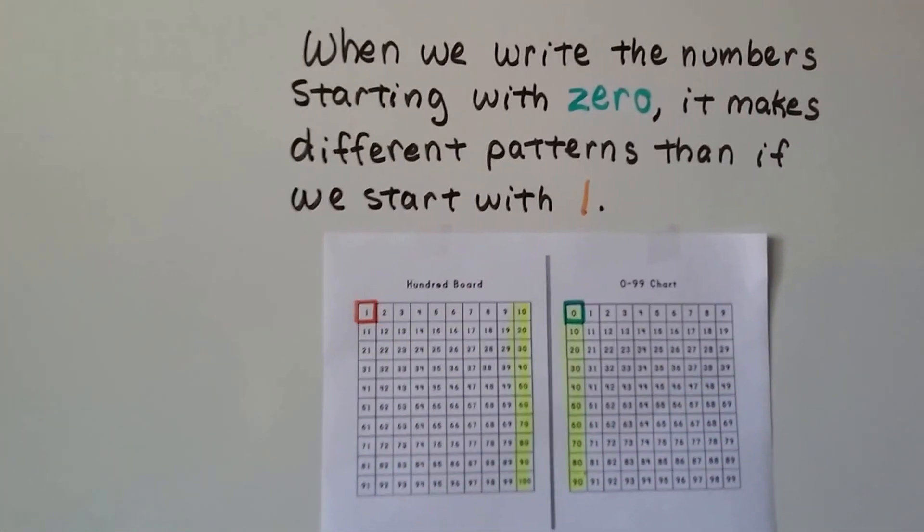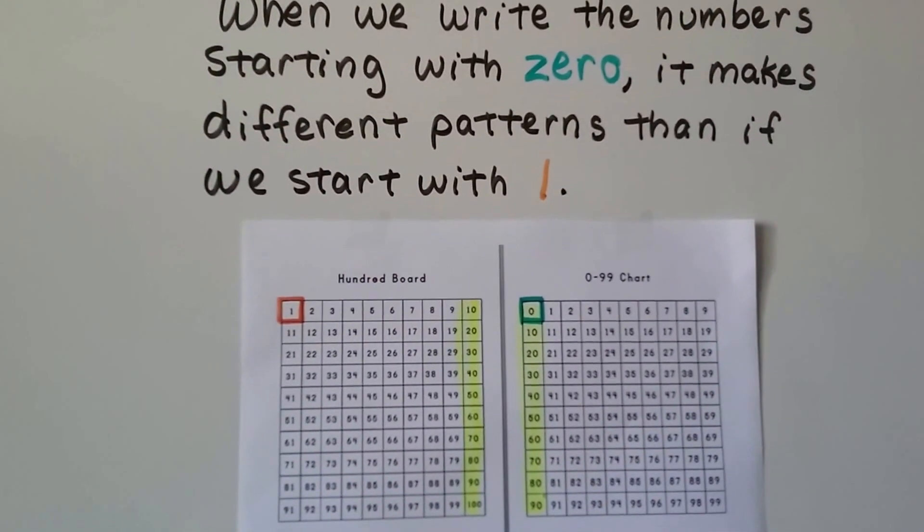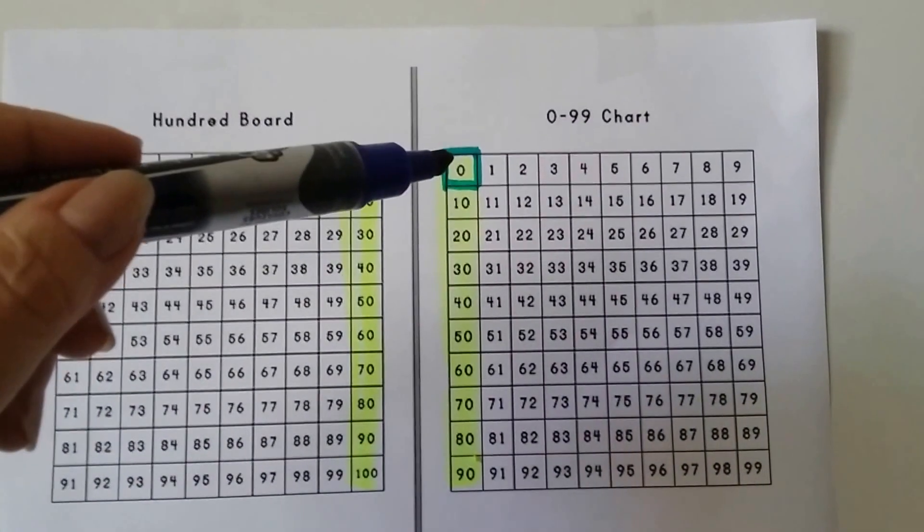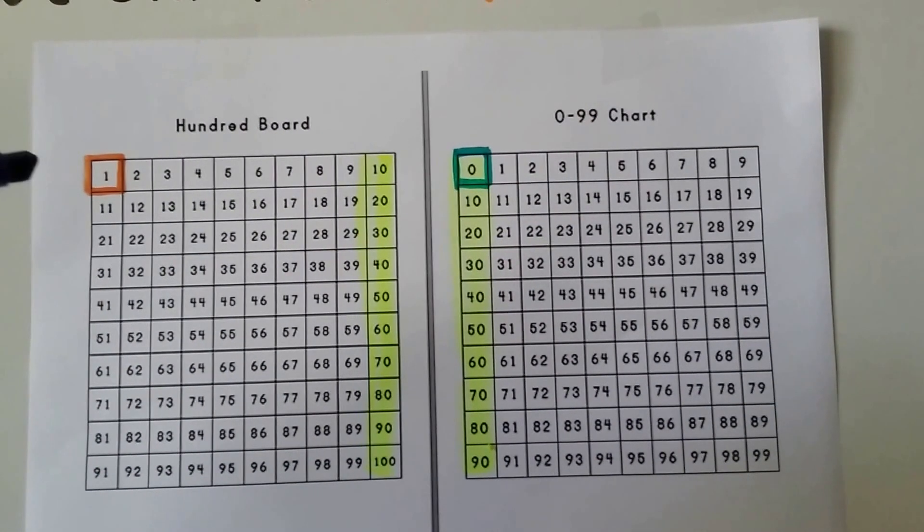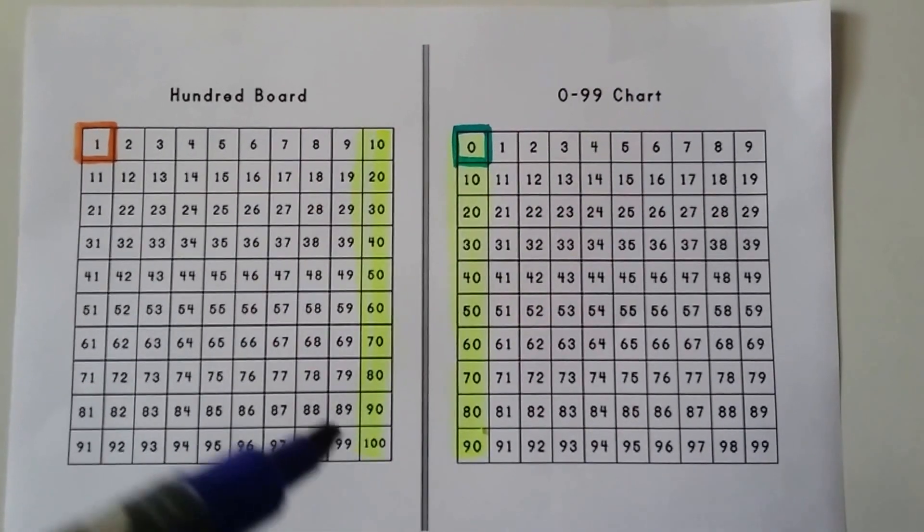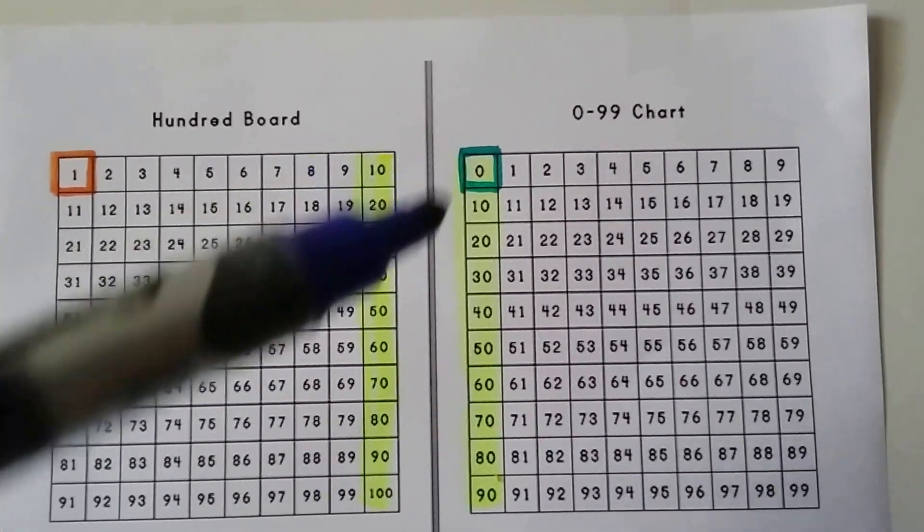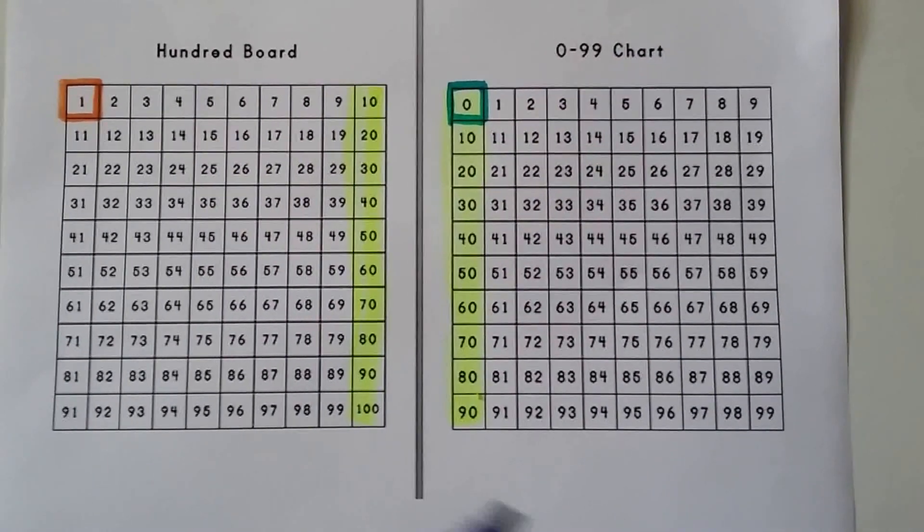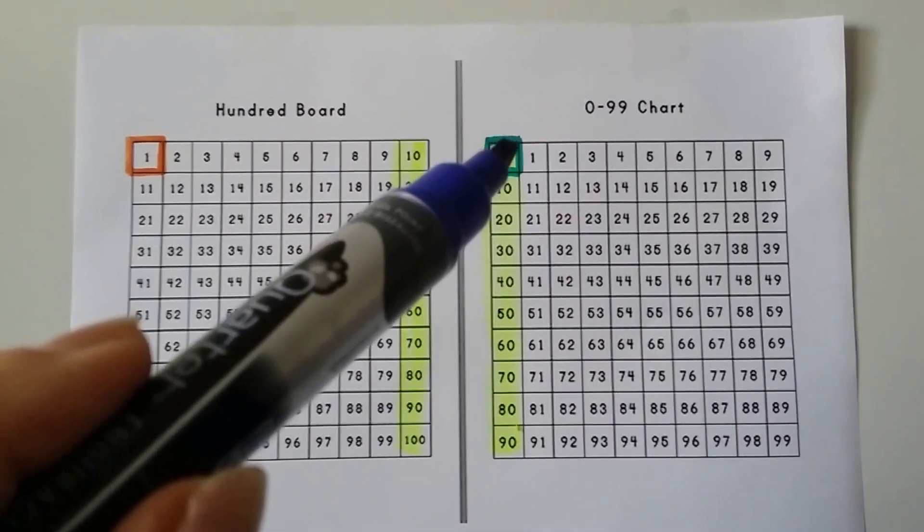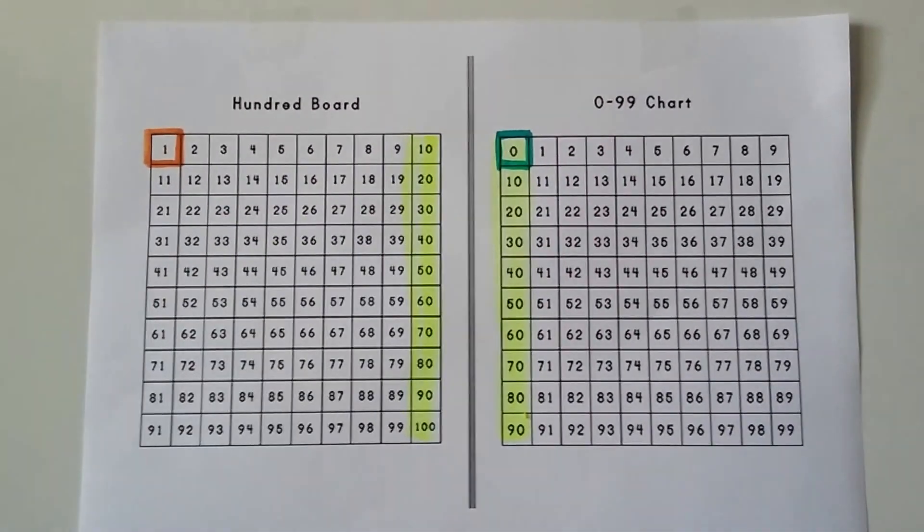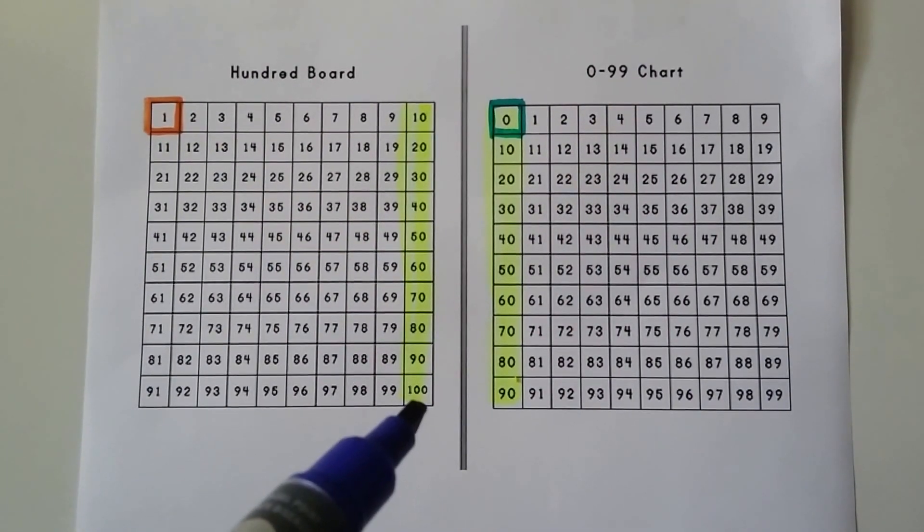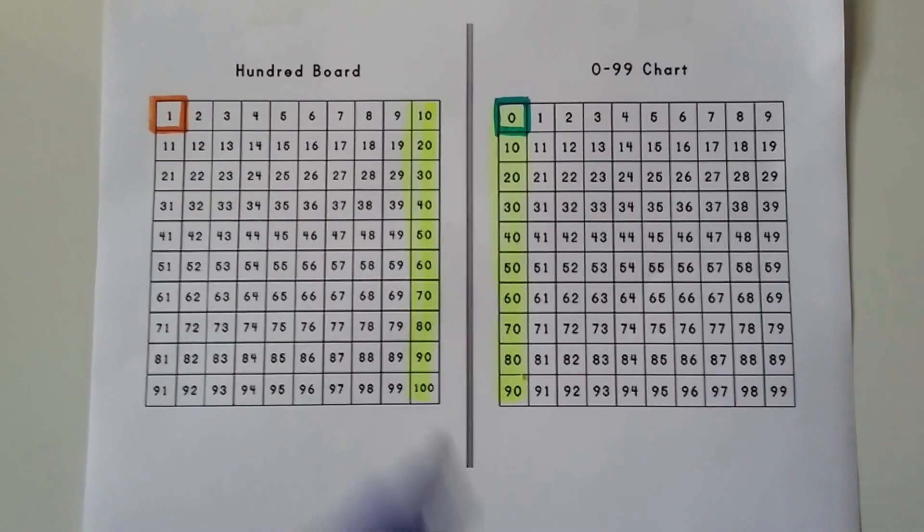When we write the numbers starting with 0 it makes different patterns than if we start with a 1. We've been using a 0 to 99 chart. It starts with a 0 up in this corner. But a 100 board starts with a 1 in this corner. It ends in 100. The 0 to 99 chart starts with a 0 and stops with a 99. Because we put this 0 here in front of the 1 we added another digit to our chart in the front. Because it starts with a 1 and there's no 0 here we could add another digit to the end of the chart, a 100 after the 99.